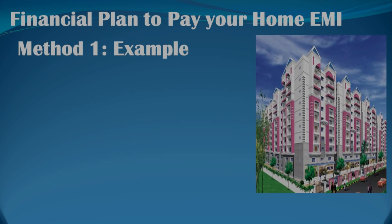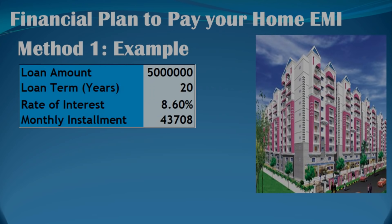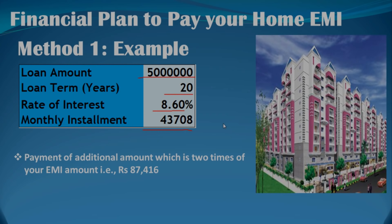The first method — for example, there is a home loan of 50 lakhs. The rate of interest is 7.66%. So your monthly EMI is approximately 43,700 rupees. In the first method, every EMI is 43,700. For example, every year we target a 10-year tenure.